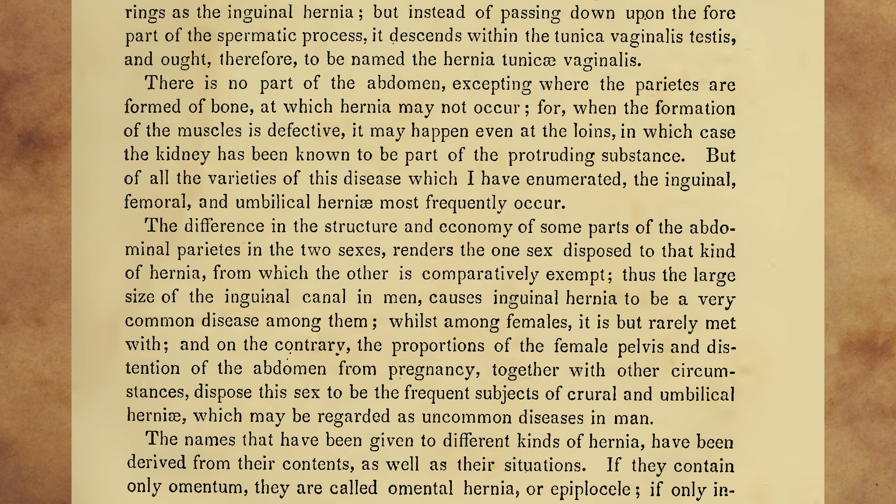The difference in the structure and economy of some parts of the abdominal parietes in the two sexes renders one sex disposed to that kind of hernia from which the other is comparatively exempt. Thus, the large size of the inguinal canal in men causes inguinal hernia to be a very common disease among them, whilst among females it is but rarely met with, and on the contrary, the proportions of the female pelvis and distension of the abdomen from pregnancy, together with other circumstances, dispose this sex to be the frequent subjects of crural and umbilical hernia, which may be regarded as uncommon diseases in men.